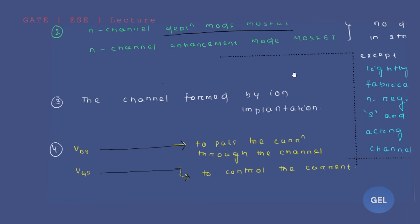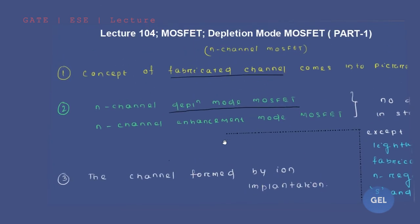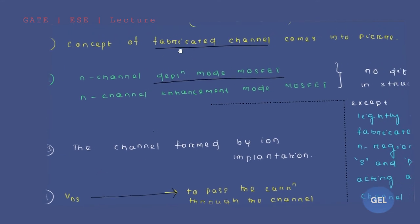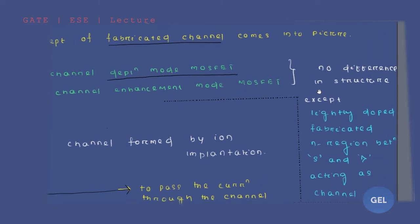Ion implantation means we take ions and implant them into the channel region, so that even at zero input voltage, those implanted ions cause current to be produced. The fourth point: VGS is responsible to pass current through the channel, and VGS is responsible to control the flow of current in depletion mode MOSFET. These are the four very important points, with the key difference being the concept of the lightly doped fabricated n-region between source and drain.